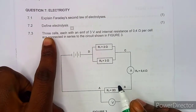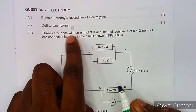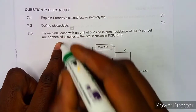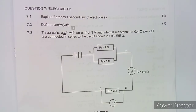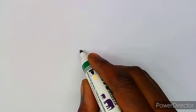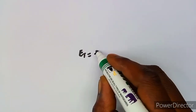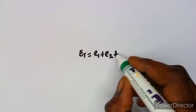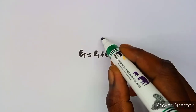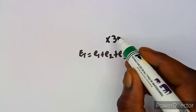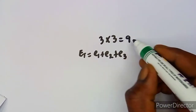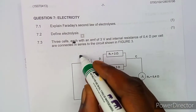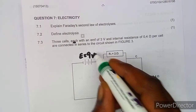Each cell has an EMF of 3 volts and there are three of them in series. The total EMF in series is E1 + E2 + E3, so we simply multiply: 3 × 3 = 9 volts. The total EMF of the source is therefore 9 volts.